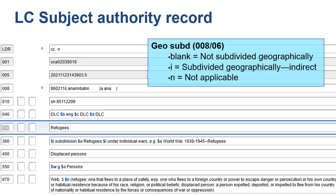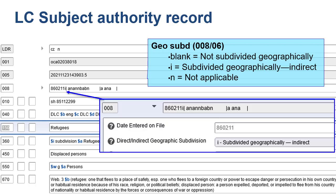Authority records will also indicate if a heading can be subdivided geographically, in the 008-06. A blank means the heading is not subdivided geographically. The code I for direct geographic subdivision means the larger body would precede the smaller or more specific geographic location, for example California, Los Angeles. Code N means geographic subdivision is not applicable. In this example authority record for the subject heading Refugees, there is an I in the 008-06, meaning this heading can be geographically subdivided indirectly.